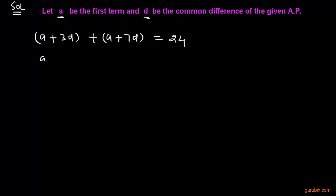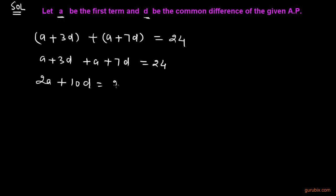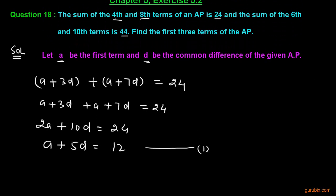Let us solve this. We have A plus 3D plus A plus 7D equals 24, which gives 2A plus 10D equals 24. Dividing all three terms by 2, we get A plus 5D equals 12. Let this be equation number 1.